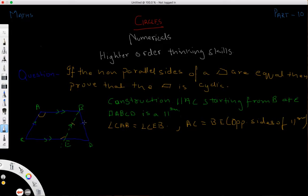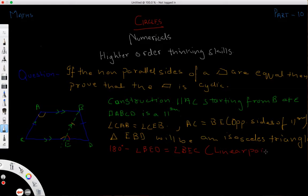This will be equal to this. Thus, triangle EBD will be an isosceles triangle. Then, what we have here is this angle will be 180 minus this angle because 180 degree minus angle BED is equal to BEC because they are linear pair. So what we get here is BEC is equal to 180 minus BED. This is an isosceles triangle.